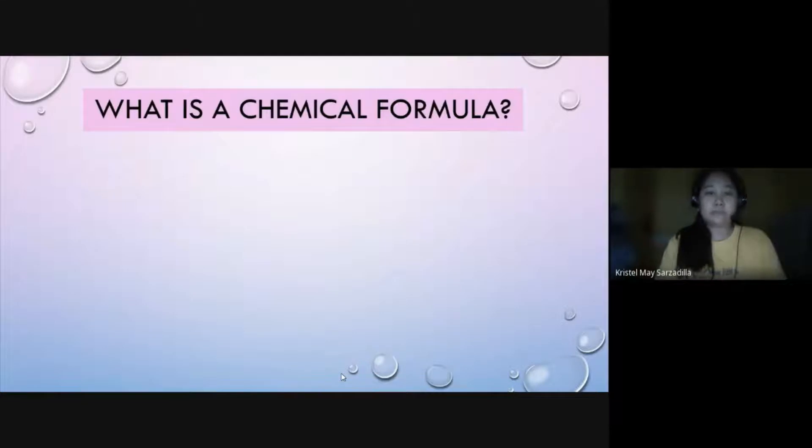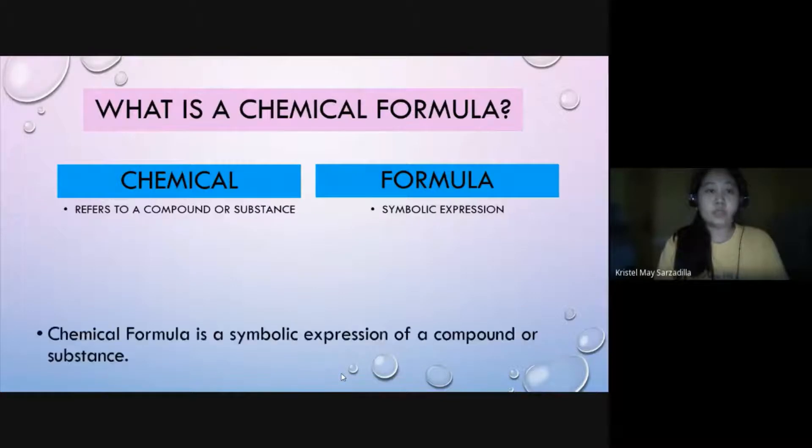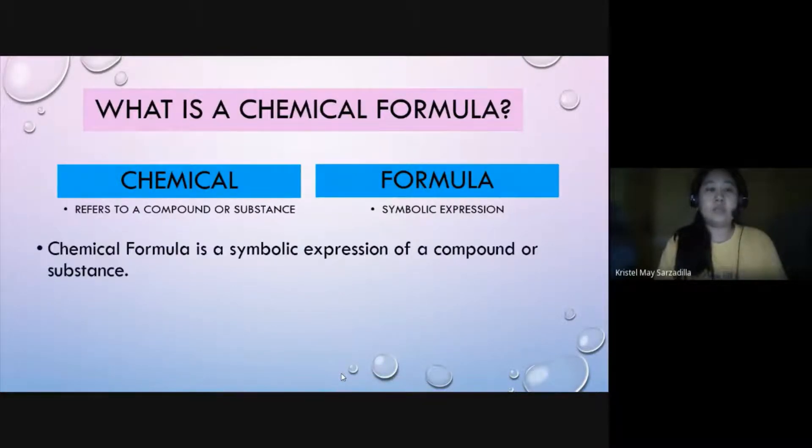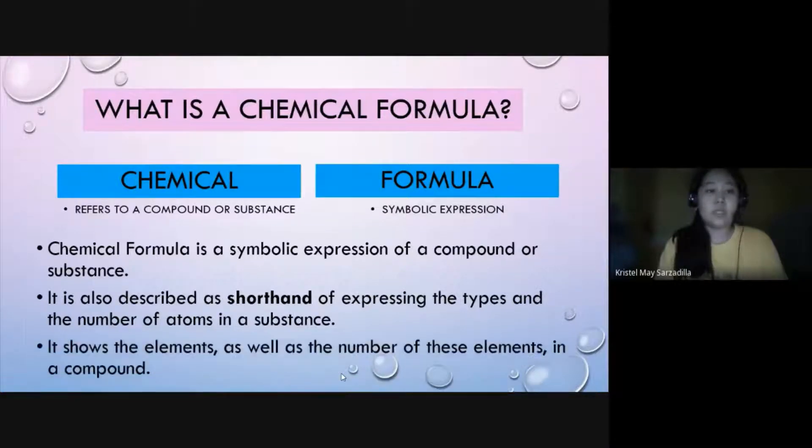What actually is a chemical formula? Actually, chemical formula comprises two words. The first word is chemical. So, chemical refers to a compound or substance. While formula refers to a symbolic expression. If we combine the two concepts together, chemical formula is a symbolic expression of a compound or substance. It is also described as shorthand of expressing the types and number of atoms in a substance. Also, it shows the elements as well as the number of these elements in a compound.